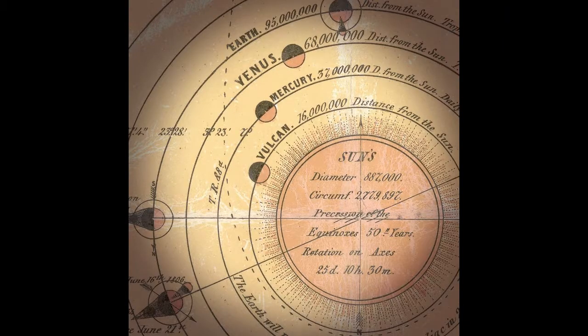People actually thought there was a secret planet on the other side of the Sun that we didn't see, called Planet Vulcan — I'm not even kidding. It was Planet Vulcan, which is objectively awesome as a Star Trek fan. But Newton's theory of gravity simply couldn't explain Mercury's orbit.